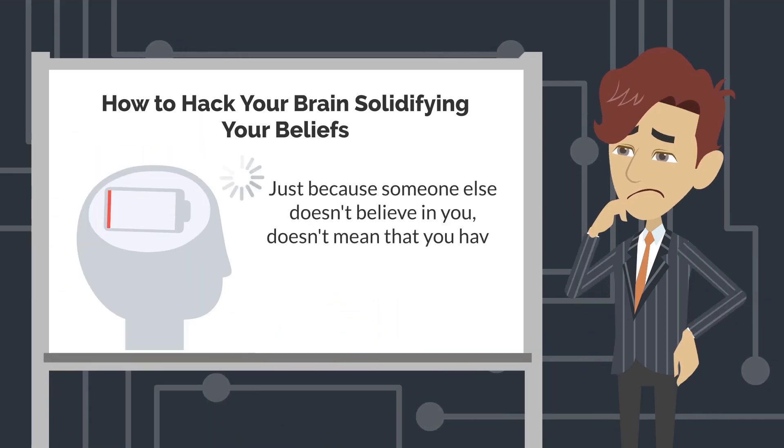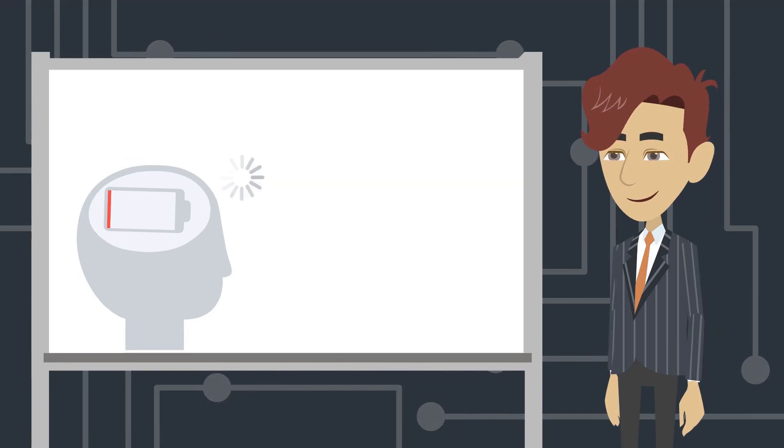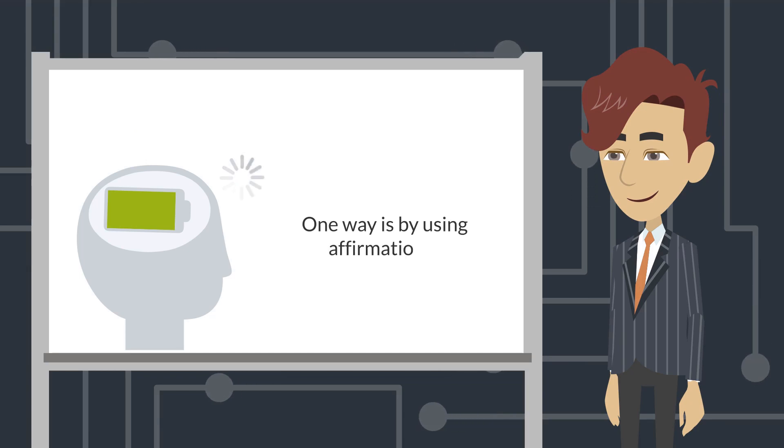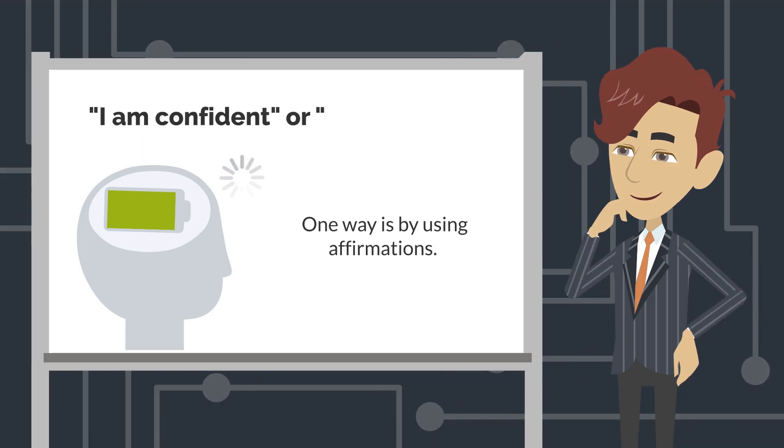There are many ways to hack your brain, even though it goes against your instincts. One way is by using affirmations. They are expressed as 'I am confident' or 'I can do this.'